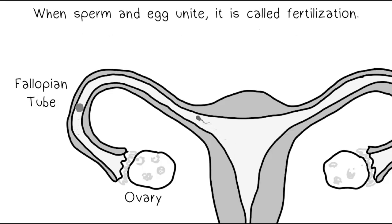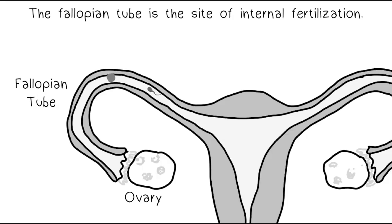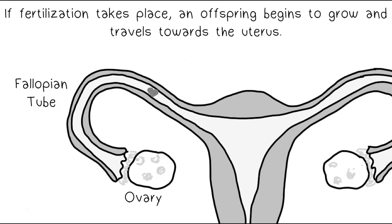When sperm and egg unite, it is called fertilization. The fallopian tube is the site of internal fertilization. If fertilization takes place, an offspring begins to grow and travels towards the uterus.